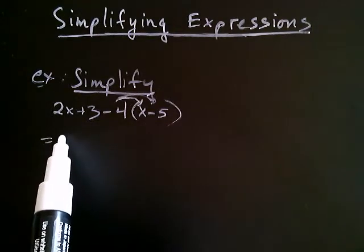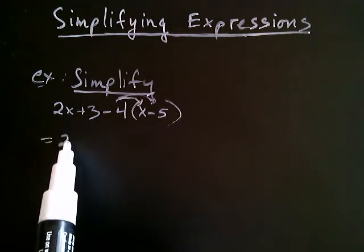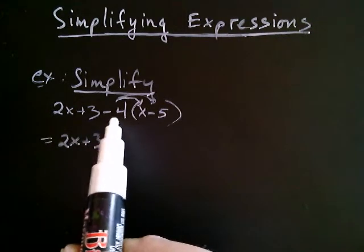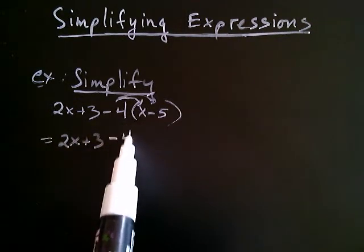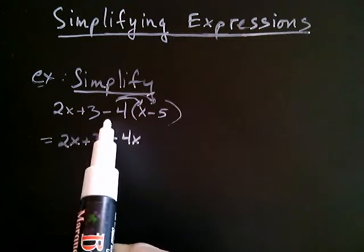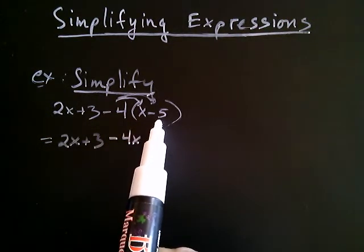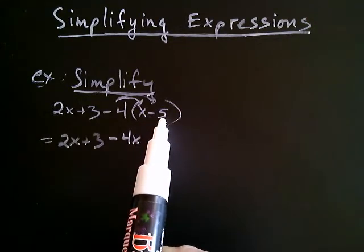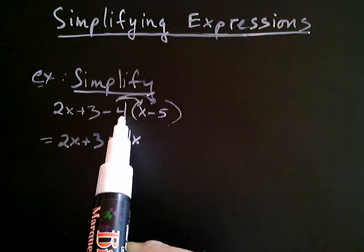So, the 2x plus 3 is going to remain as it is. So, 2x plus 3. Okay, then negative 4 times x is negative 4x and negative 4 times negative 5. Notice how I thought of the negative here as belonging with the 5 and the negative here as belonging with the 4.